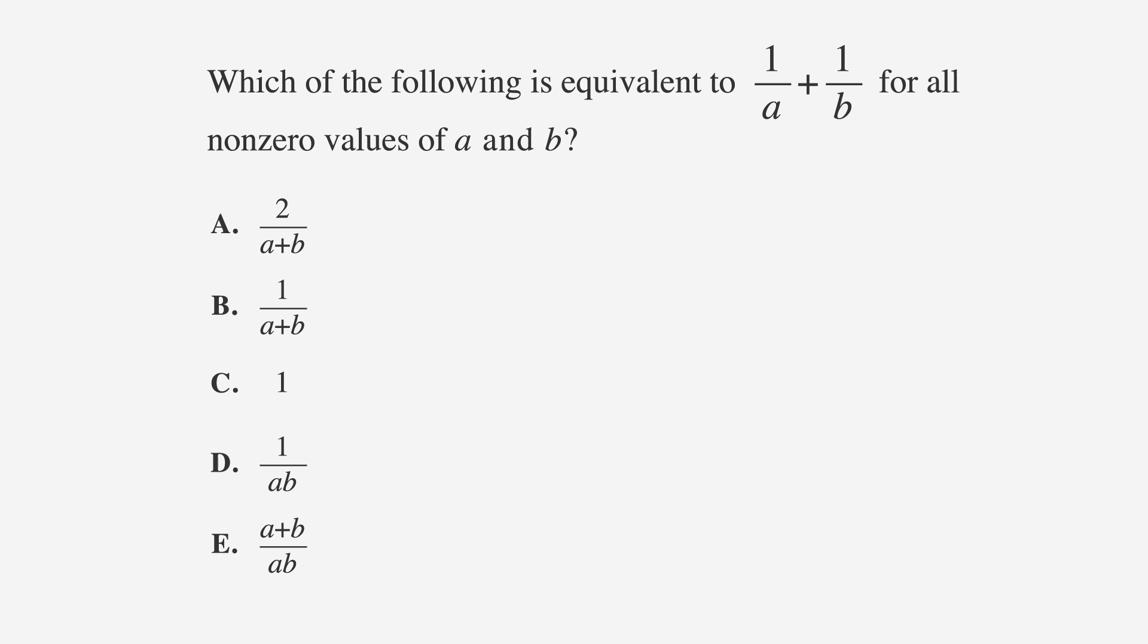As always, we'll underline the facts, in this case non-zero values of A and B. We then want to circle the key words in the question, which would be 1 over A plus 1 over B.